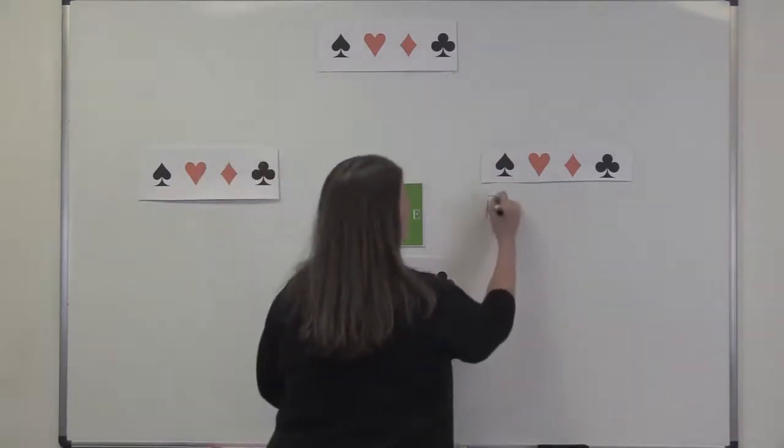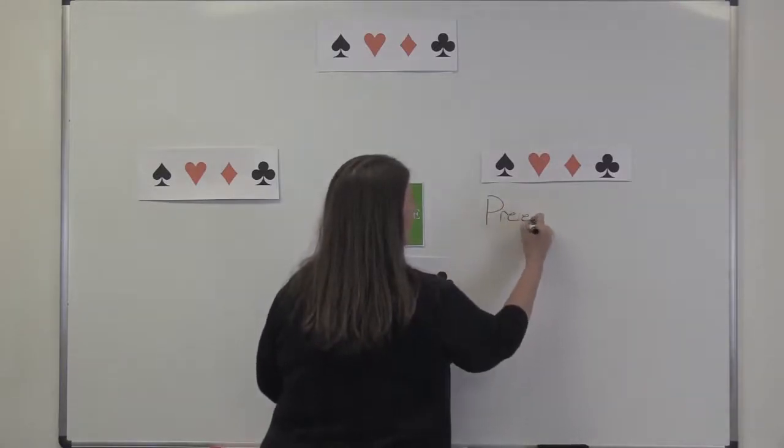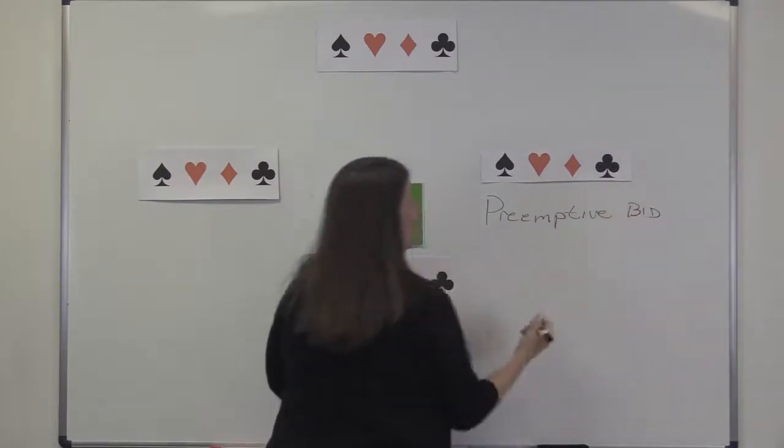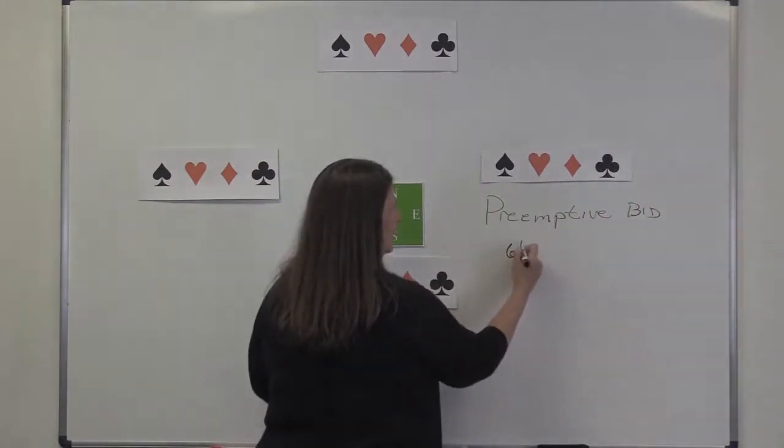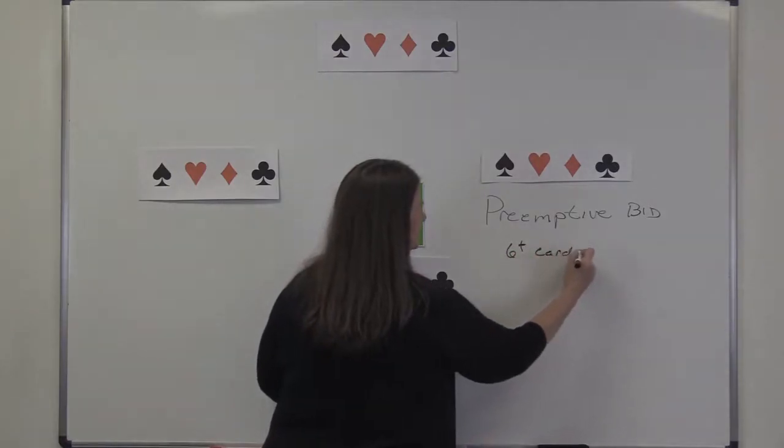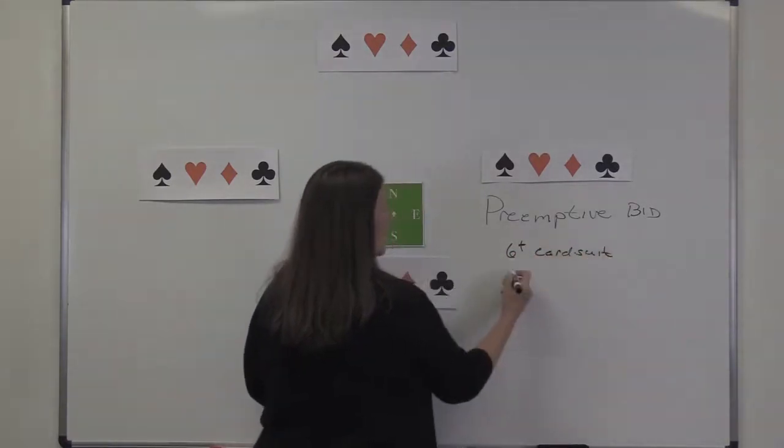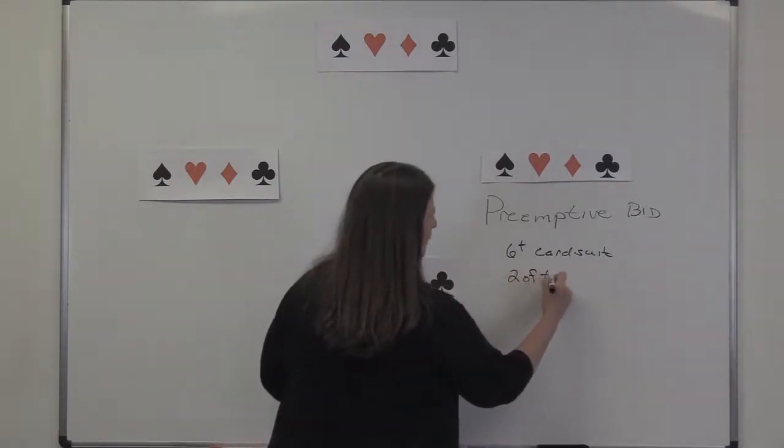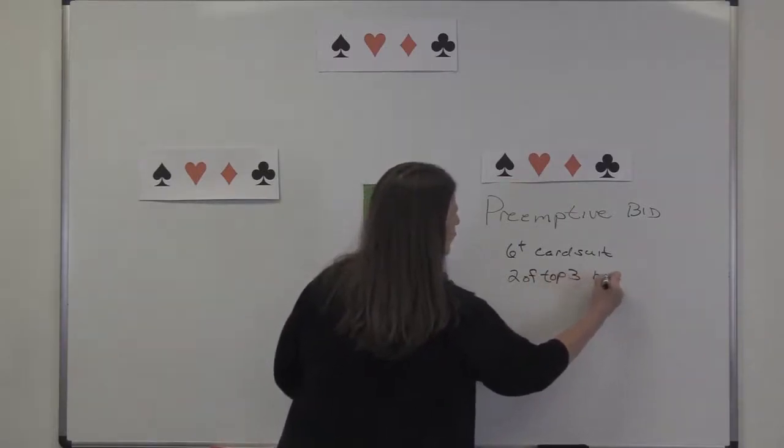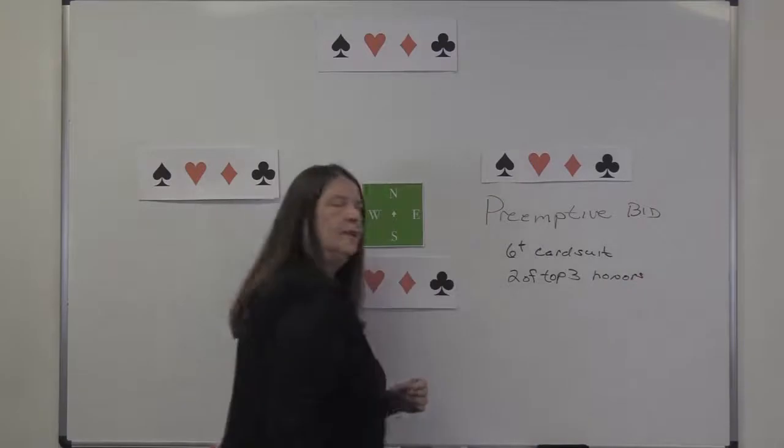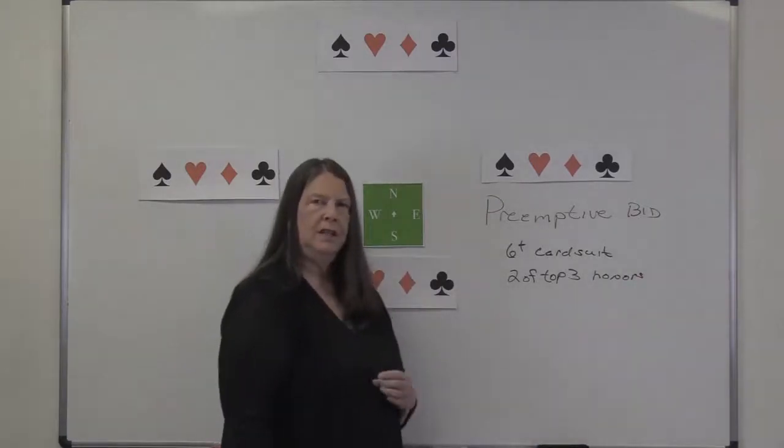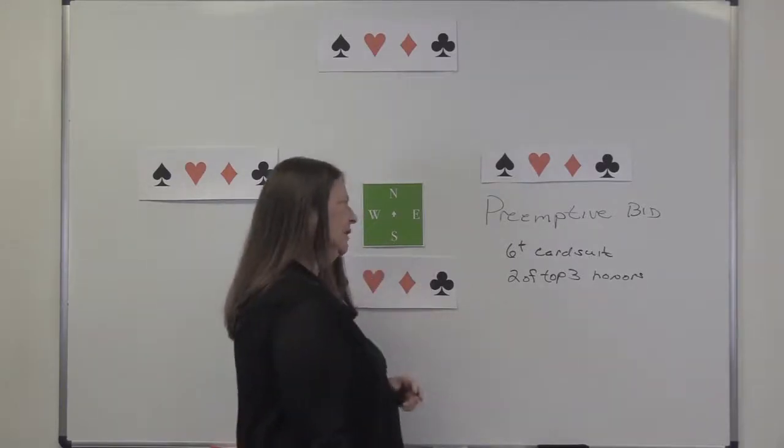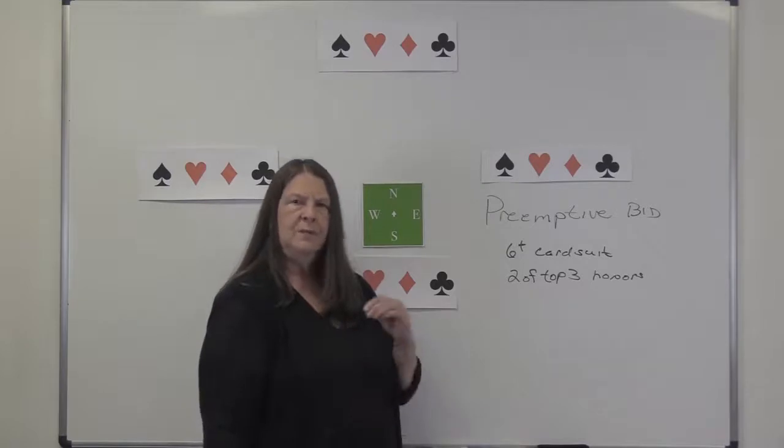I'll spell preemptive for you. We're typically talking about a six-card or longer suit. It's a good suit, a suit with two of the top three preempts. And I'm pretty rigid about my preempts. You'll find a lot of people kind of willy-nilly with it. They do it anytime they have a seven-card suit. They don't care how good it is. They don't worry about a lot of other things. I'm very specific.